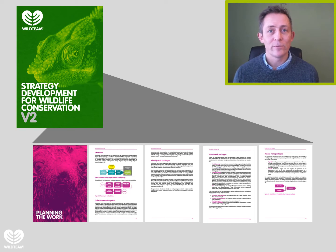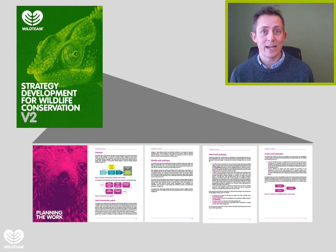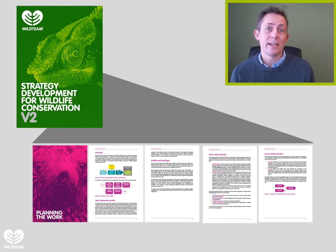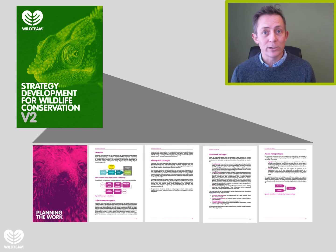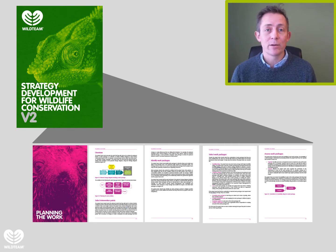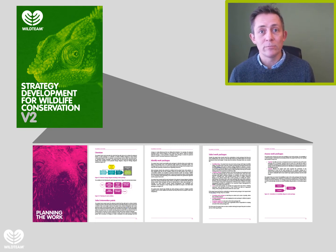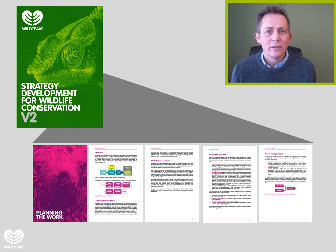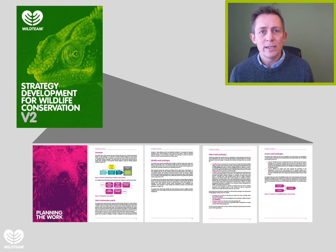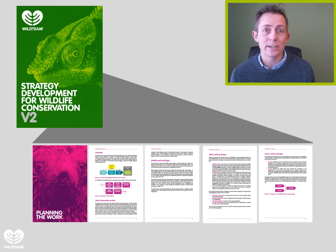It is only once you've mapped out the impact you want to achieve that you can go into this step — planning the work — where you decide what activities you're going to do to achieve that planned impact. It starts with selecting an intervention point: where on your diagram of planned change you're going to intervene. You may find you have different options for activities with equal merit based on the evidence base, and this section provides guidance on how to assess and rate those activities to help you decide which ones to select.